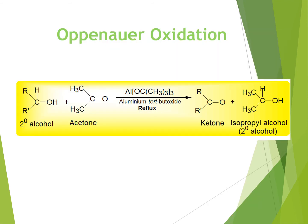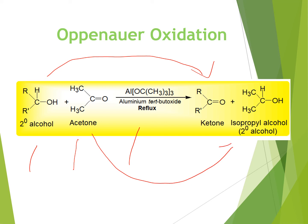If we observe again the overall Oppenauer oxidation reaction, we can see that when a secondary alcohol reacts with excess acetone in the presence of the catalyst aluminum tertiary butoxide, the secondary alcohol will be oxidized to its corresponding ketone. And the acetone used in this reaction will be reduced to its corresponding secondary alcohol, isopropyl alcohol. This is the overall Oppenauer oxidation reaction.